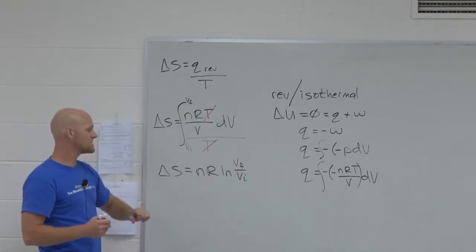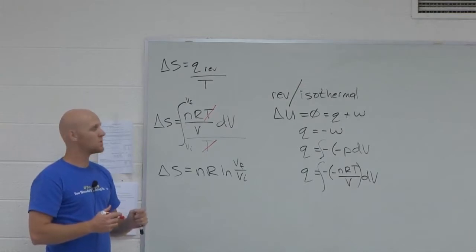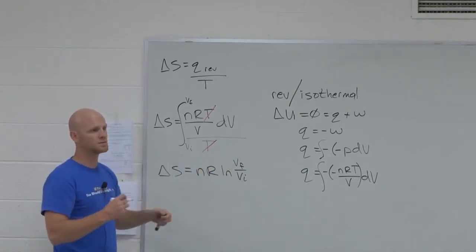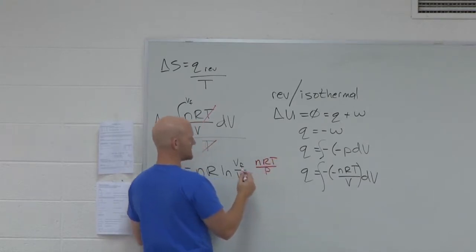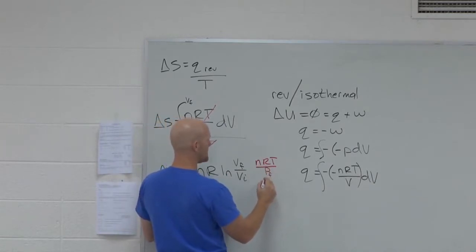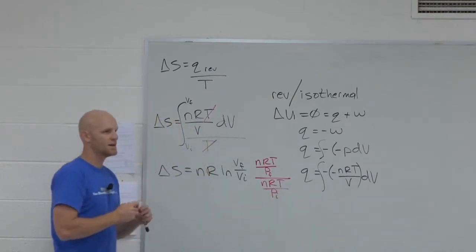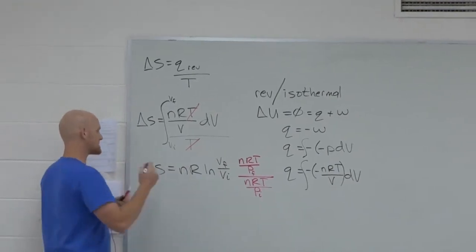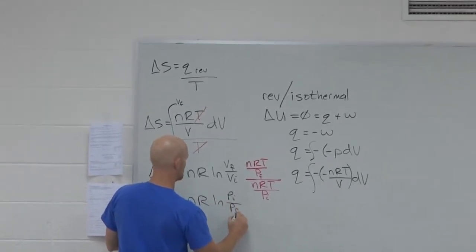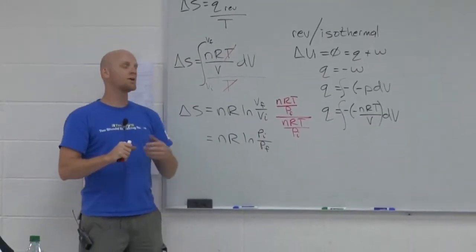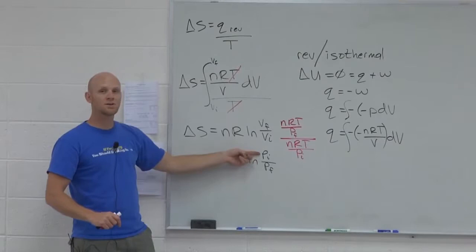One thing to note — actually two things to note. I can do this in terms of volumes, but I can also do this in terms of pressures. What is V of a perfect gas equal to? nRT over P. So V final is nRT over P final, and V initial is nRT over P initial. If you substitute those in, this is also equal to nR ln of P initial over P final. Notice pressure and volume are inversely related, so it shouldn't surprise us that V final over V initial turns into P initial over P final.